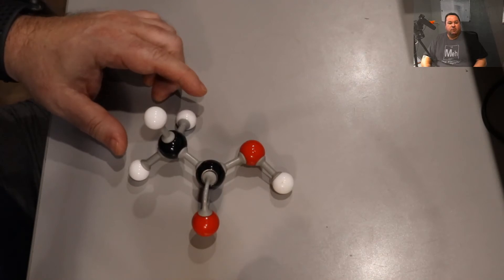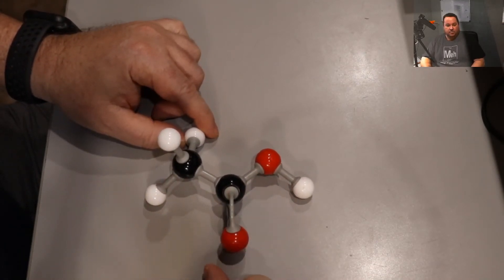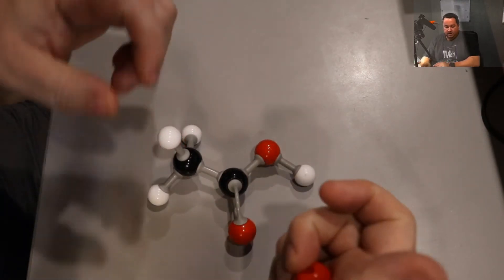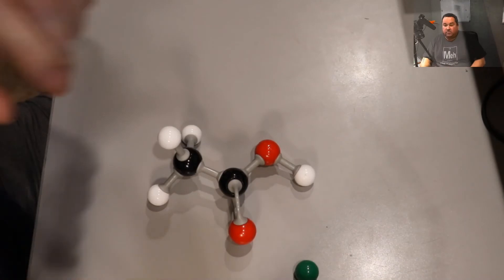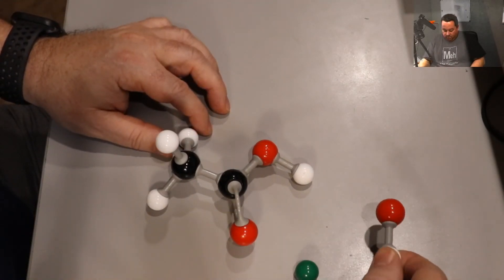In this reaction, we had a two carbon carboxylic acid, and it was reacting with sodium hydroxide. So these model kits don't show ionic compounds very well, but we're going to improvise a little bit.